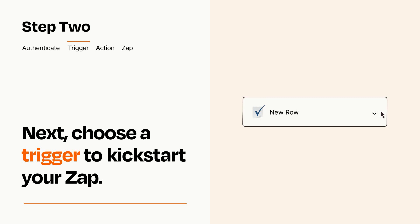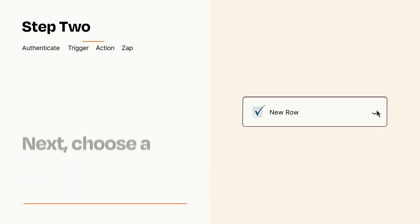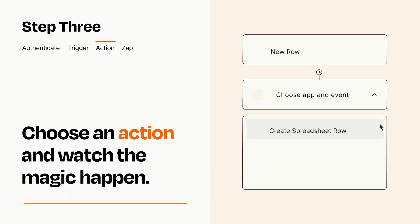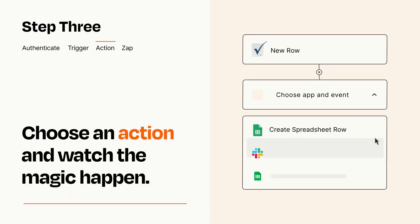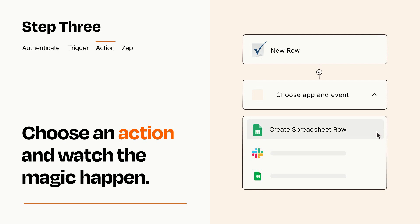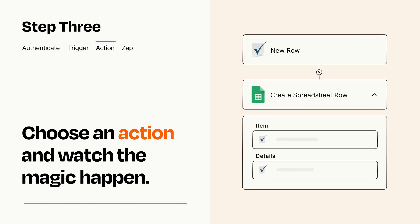This last part is where the magic happens. Choose the action you want to happen in your target app. You'll see a bunch of fields where you can specify the details of your Zap. You can type free-form text or pull data in from your trigger step as needed.